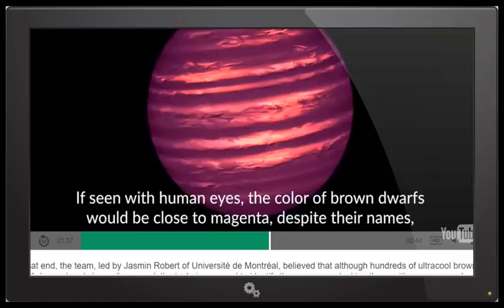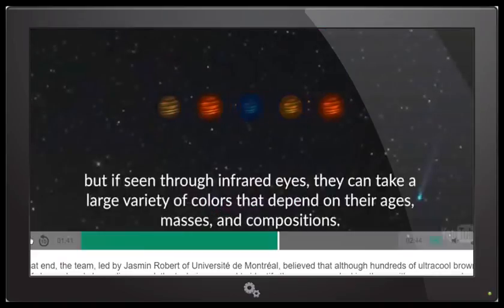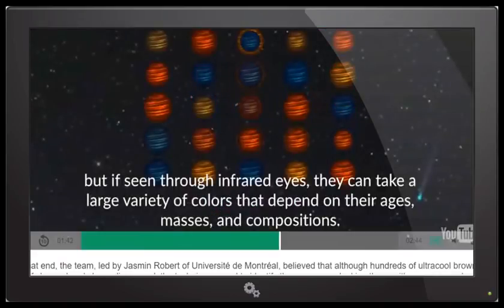The next frame says, if seen with human eyes, the color of brown dwarfs would be close to magenta despite the name brown dwarf. Kind of a cool looking object. Now, the next frame says, but if seen through infrared eyes, they can take a large variety of colors that depend on their ages, masses, and composition.